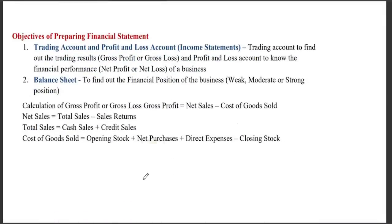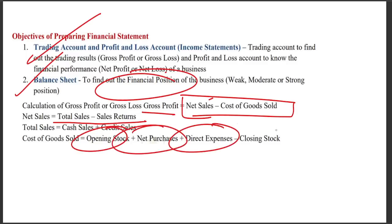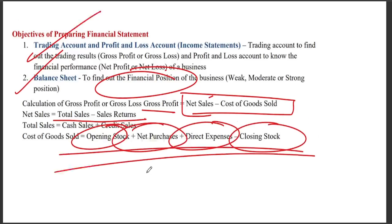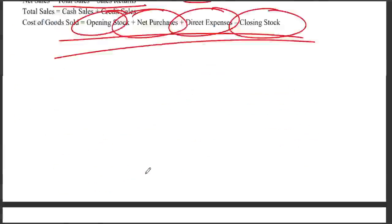Financial statements are prepared for investment purposes and to show trading results and financial position. The trading account shows gross profit: net sales minus cost of goods sold. Cost of goods sold equals opening stock plus net purchases plus direct expenses minus closing stock. The profit and loss account shows net profit after deducting indirect expenses from gross profit.